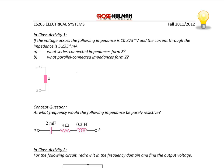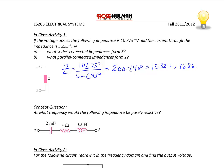To find Z, we compute Z = 10∠75° divided by 5m∠35°, which equals 2000∠40°, or in rectangular form, 1532 + j1286 ohms. So the series combination for Z would be a resistor of 1532 Ω in series with an inductor of j1286 Ω. We know it's an inductor because the imaginary part is positive, matching the positive jωL impedance of an inductor — a capacitor would have a negative coefficient.